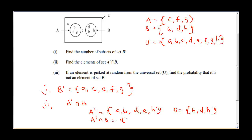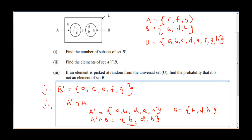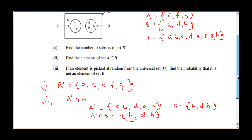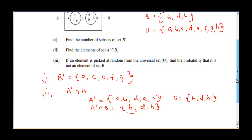Now to find A complement intersection B, we look for elements common to both sides. B can be found in A complement and also in B, so B comes first. D is common to both sides, so D comes second. H is common to both, so H comes third. Our final answer is {B, D, H}.